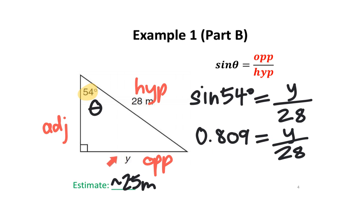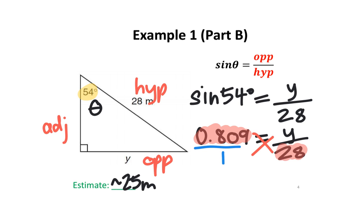But how do we find Y — how do we find the length of this side? I'm going to show you a little cheat. You're going to draw a line under 0.809, then draw a 1. This is because a line and 1 means divide by 1, and anything divided by 1 stays the same. At this point, we can solve this ratio using cross multiplication — multiply the numbers connected by the cross, then divide by the leftover number. Using your calculator, put in 0.809 multiplied by 28, then divided by 1. You should get approximately 22.7.